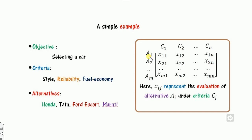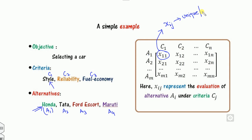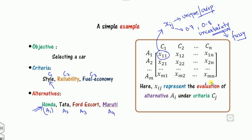You can construct a matrix like this. A1 is my Honda City, A2 is my Tata, A3 is my Ford, A4 is my Maruti; and criteria C1, C2, C3, and so on. X11 means: if a person wants to select Honda City with the parameter of style, they give some rating — that is the evaluation of alternative Ai under criteria Cj. If this Xij is a unique number, a crisp number, then we call it crisp set theory. But if someone gives 0.7 and another gives 0.8, there is uncertainty. So in order to measure this, we need the fuzzy set theory.